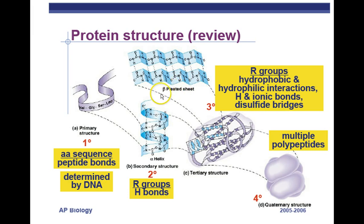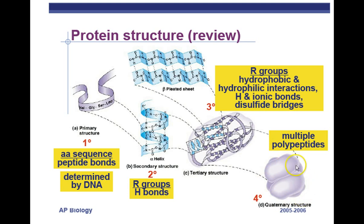Then the R groups interact further, forming hydrogen bonds, ionic bonds, and disulfide bridges, along with hydrophobic and hydrophilic interactions, eventually folding the protein into its final three-dimensional shape. For most proteins like insulin or amylase, this tertiary structure is the final form. However, some proteins have a quaternary structure where more than one polypeptide chain comes together — for example, hemoglobin, which requires four different polypeptides. This means four genes are needed to make four polypeptides that come together to form one hemoglobin protein.